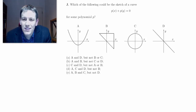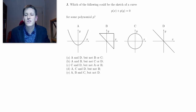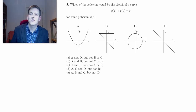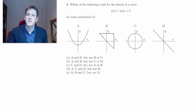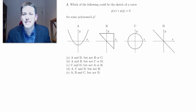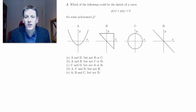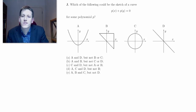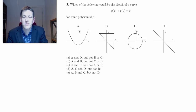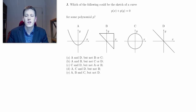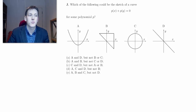In this video we're going to look at the last of the short answer questions from the Oxford Maths Admissions Test from 2018, question 1j. It says: which of the following could be the sketch of the curve p(x) + p(y) = 0 for some polynomial p?